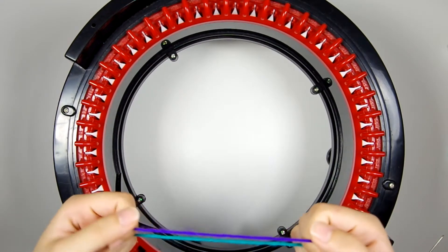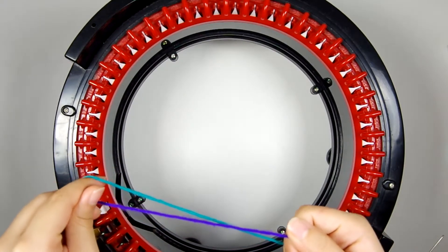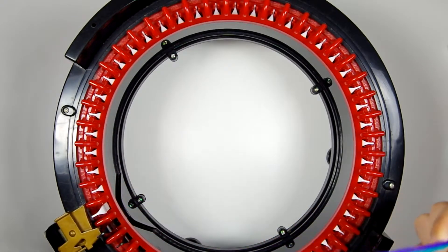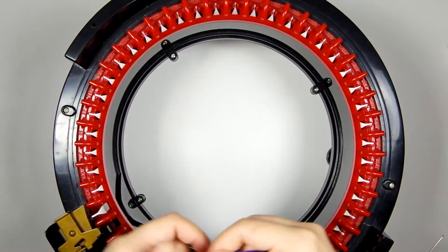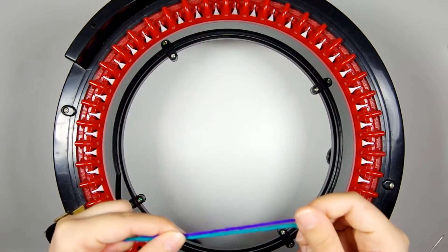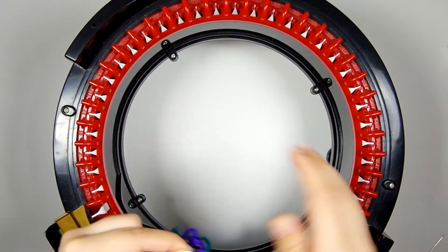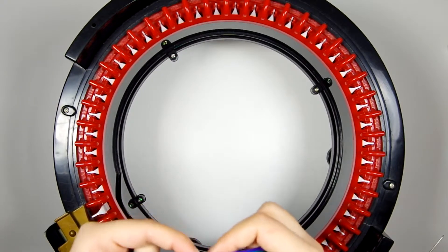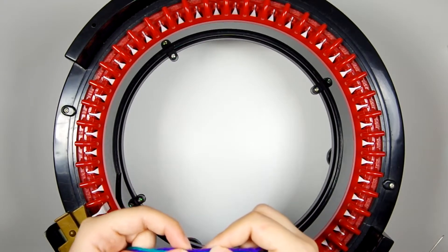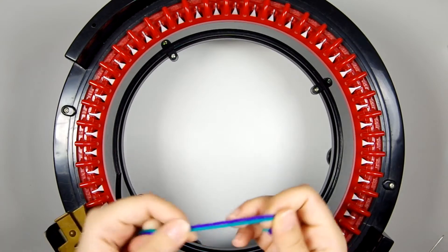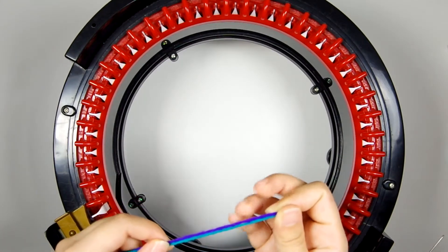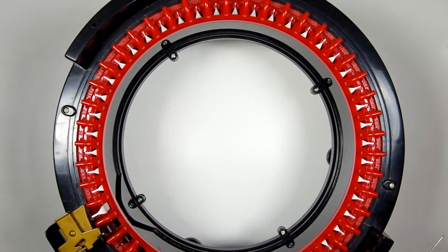Now this is Caron Simply Soft, which is a rather thin worsted weight yarn. It's on the thinner side, but you could probably use two thicker worsteds together, or just one really thick worsted. But I'm using two strands of this lightweight worsted Caron Simply Soft yarn.